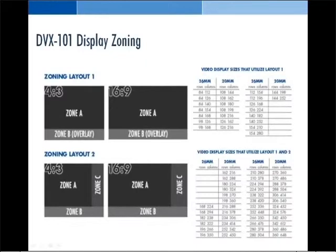Overlay zones present content on top of a full screen zone. Zoning layout 1 overlays a second content zone on top of a full screen zone. Zoning layout 2 scales down the full screen to a smaller zone while adding a second zone below and a third zone to the right.